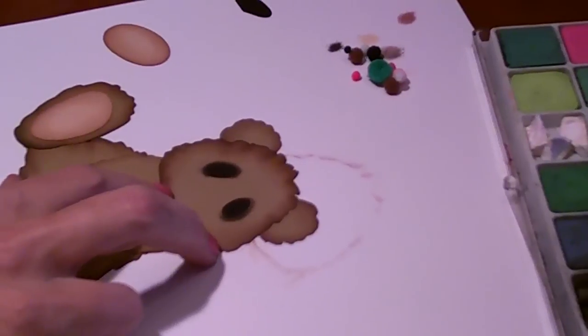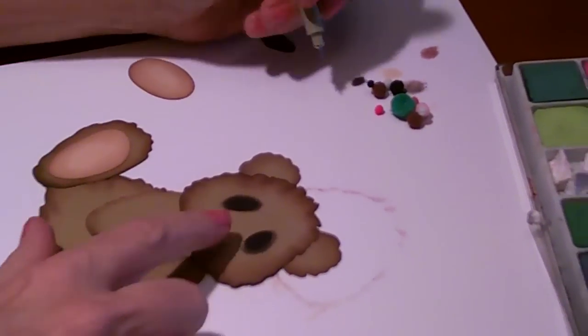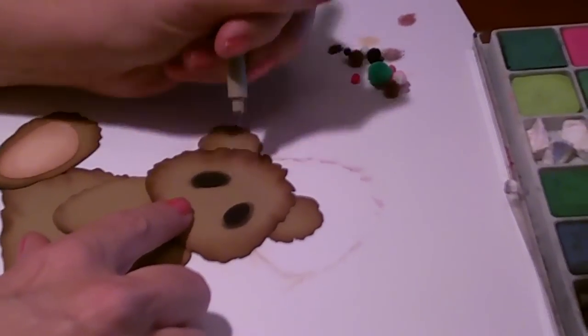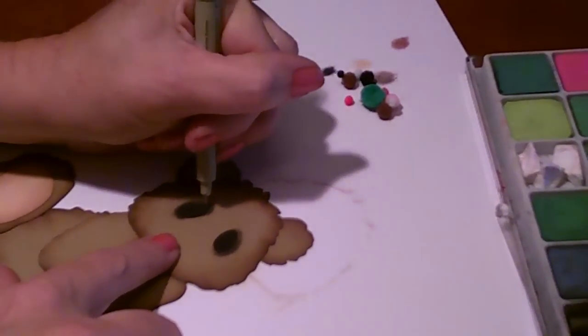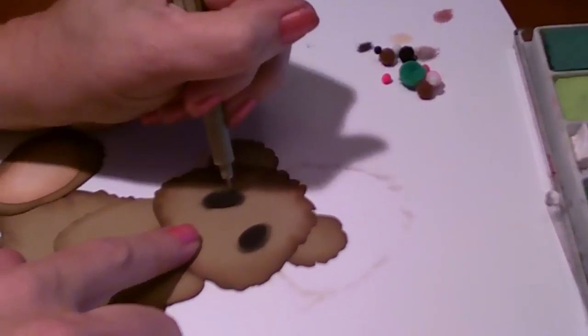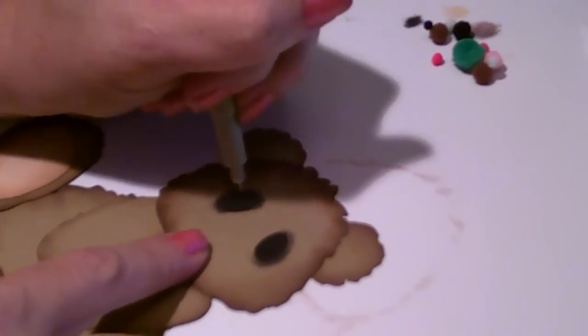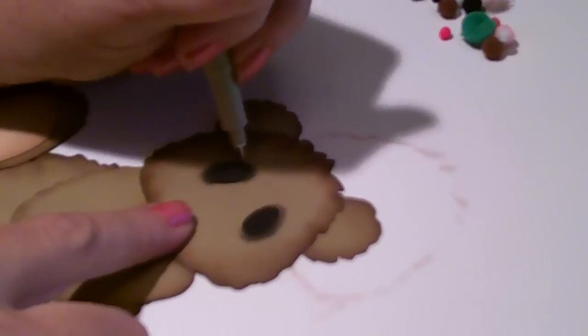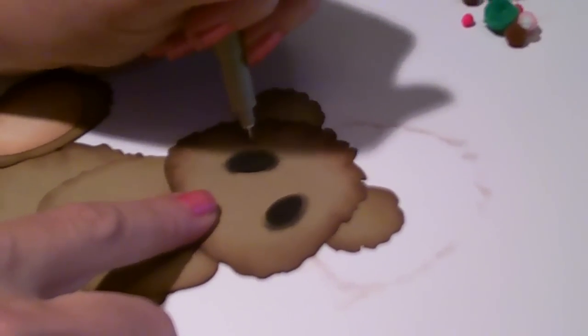Alright, now the eyelashes. I start on the inner part of the eye, and I hope you guys can see this. I kind of do arched shapes in various lengths. Sometimes I might go off to the right, sometimes most of the time I go off to the left.